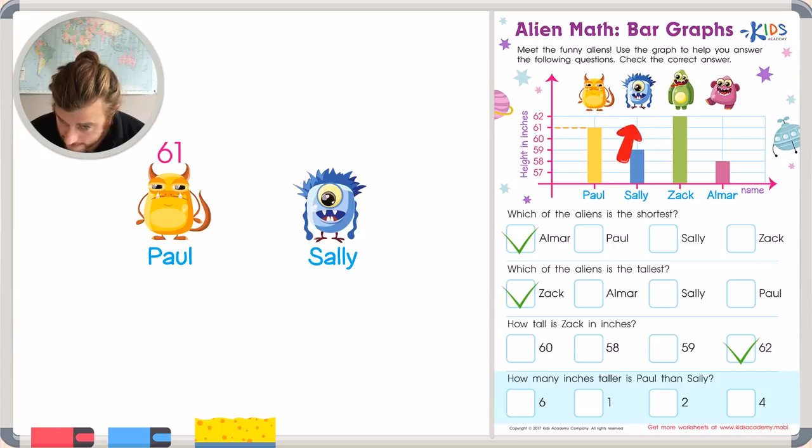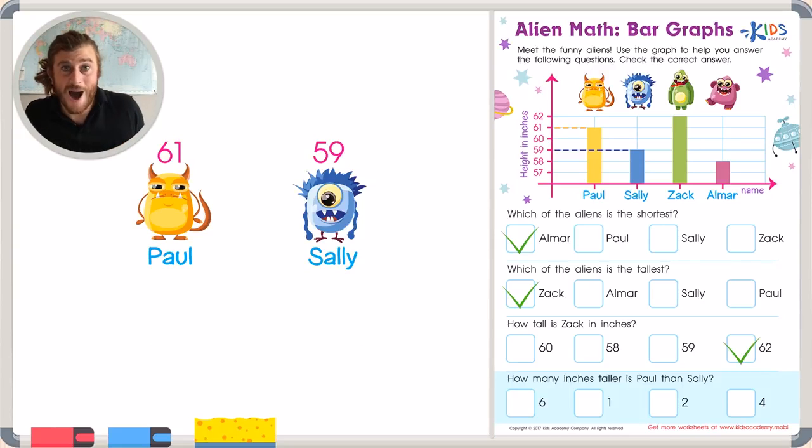Sally, on the other hand, is 59 inches tall. So I'm going to write that down again to remind myself. So we can tell that Paul is taller than Sally. But the question asks, how much taller? Let's take a closer look.